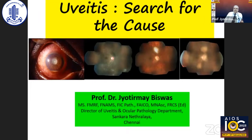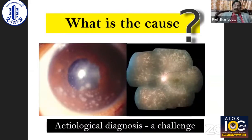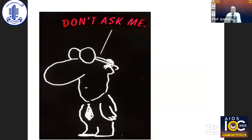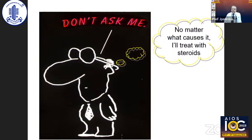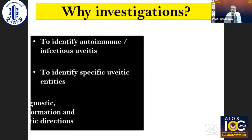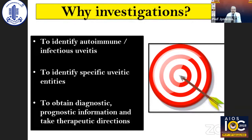Uveitis is one of the causes of visual morbidity. What is the cause of uveitis? Etiological diagnosis remains a challenge. Patients and students often don't ask what causes it, assuming steroids are always sufficient — but that is not true. Investigations are required to identify autoimmune or infectious uveitis, to identify specific uveitis entities, to obtain diagnostic and prognostic information, and to take therapeutic directions.